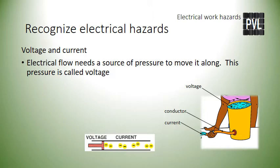Since electrical charge is many times faster and more powerful than water, if it escapes its safe path, it can cause great damage to persons or materials. The amount of voltage present in a system is an indicator of the amount of electrical danger — higher voltages equal higher potential. However, the real cause of electrical danger is the current, or the flow caused by the available voltage — the pressure.